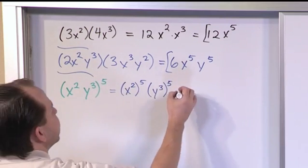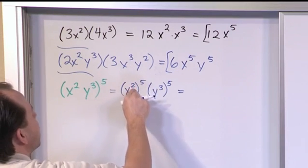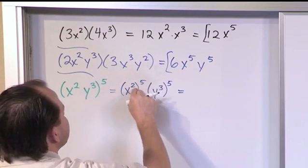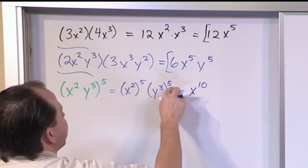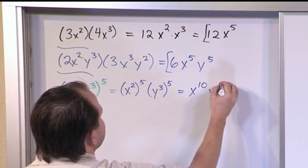Now that we have it written out like this, you can see that for the first one you have a power raised to a power. So you multiply the powers. 2 times 5 is 10. Here we have 3 times 5, so we're going to get 15.